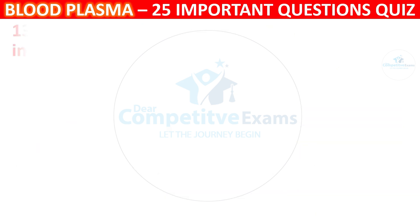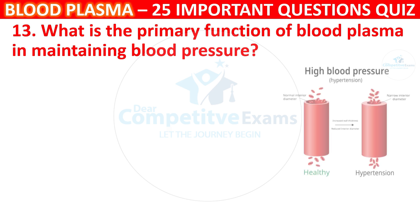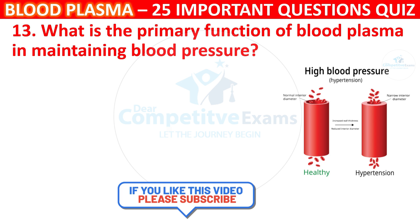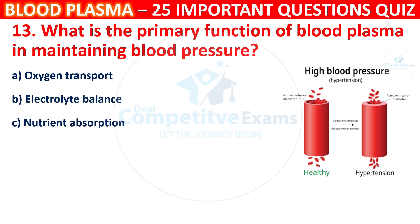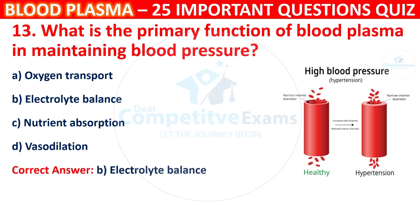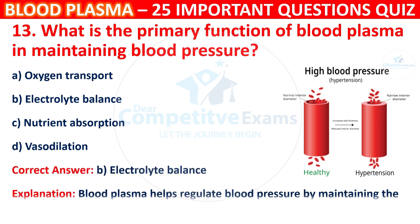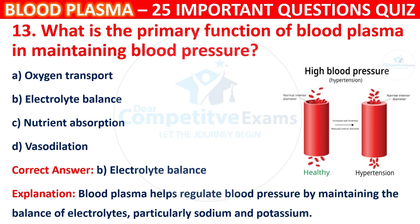Question 13: What is the primary function of Blood Plasma in maintaining blood pressure? Your options are Oxygen Transport, Electrolyte Balance, Nutrient Absorption, or Vasodilation. The correct answer is B, i.e. Electrolyte Balance. Blood Plasma helps to regulate blood pressure by maintaining the balance of electrolytes, particularly sodium and potassium.